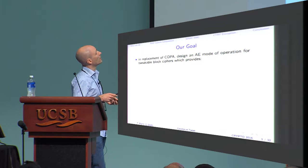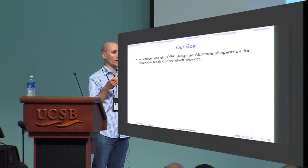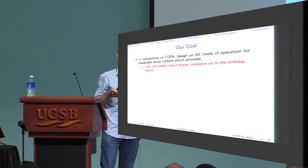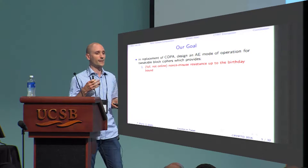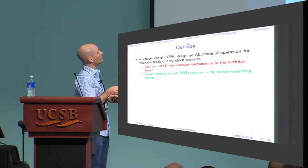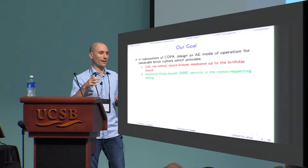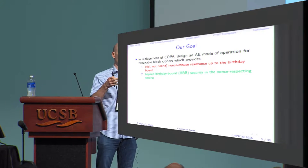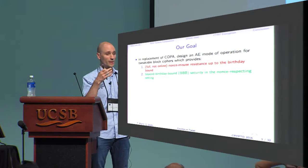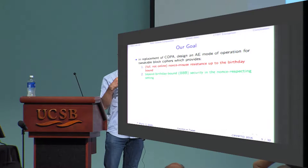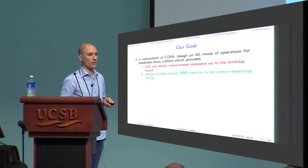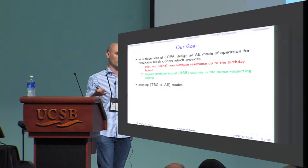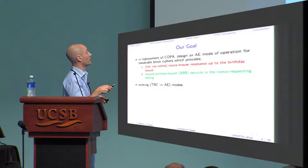What were the requirements for the mode? First, it had to be based on a tweakable block cipher. It has to offer full nonce misuse resistance — the strongest possible security notion — at least up to the birthday bound. And if possible, to get beyond birthday bound security in the nonce-respecting setting, so that if you use your mode without repeating nonces, you get beyond birthday resistance, and in case something goes wrong, you still retain a good bound up to the birthday bound.